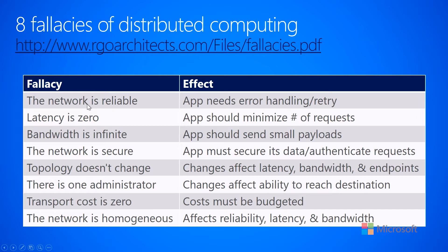The first fallacy is that a lot of people think the network is reliable. But in reality, the network is not reliable. The network connections, they come and go. There are timing issues with it and so on. What this means to you is that when you are architecting your distributed cloud application, your application needs to be able to handle error handling from network communications. And typically, we do this by performing retry operations — we tried to make a connection, that failed for some reason, and we're going to retry and make the connection again.